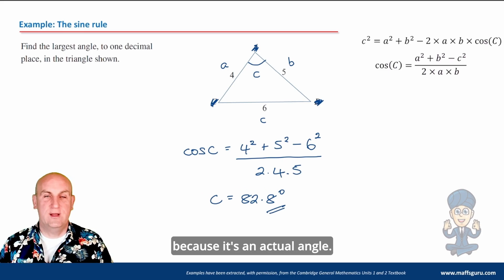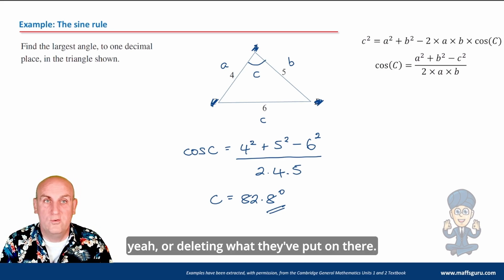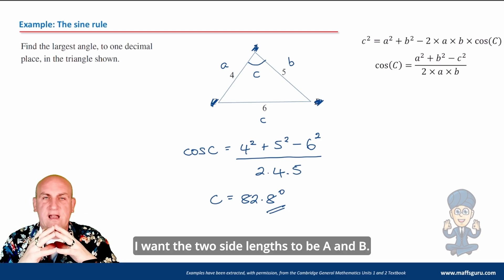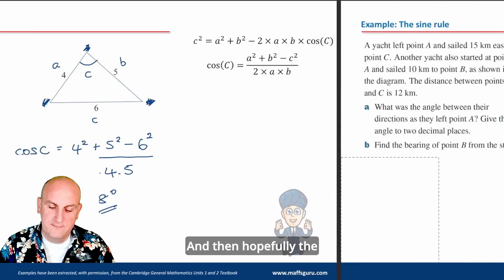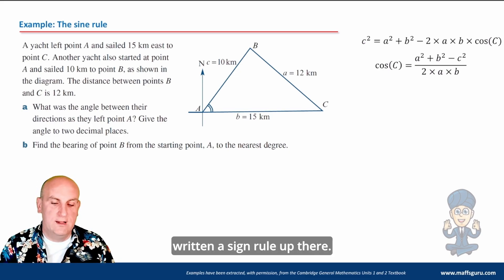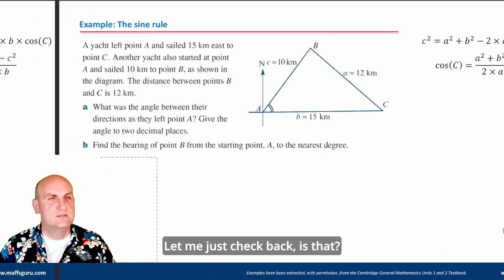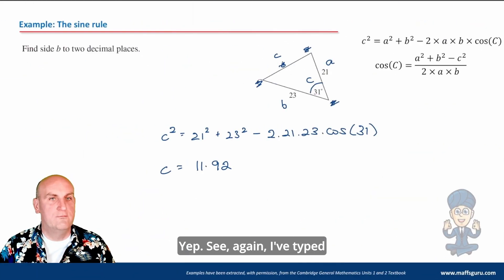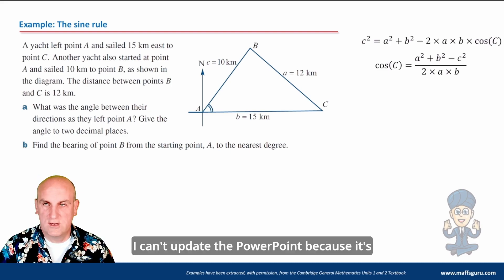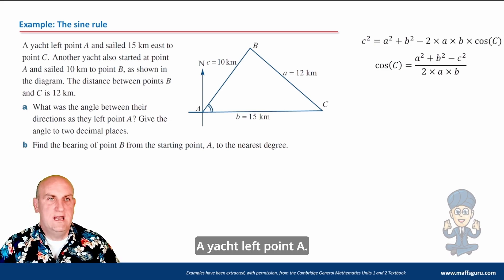The key is labeling the triangle properly — making the huggable angle C, and the two side lengths a and b. I also notice I typed 'sine rule' in the PowerPoint for these examples — they should all say 'cosine rule'. I can't update the PowerPoint now, but hopefully you're happy to note that those are all cosine rule examples.